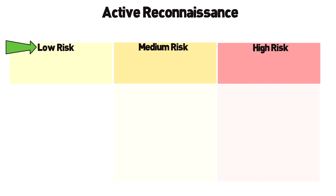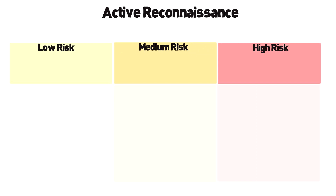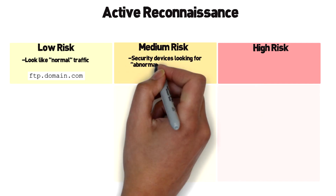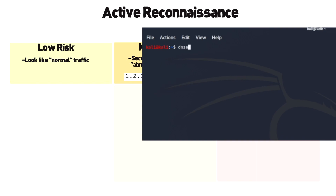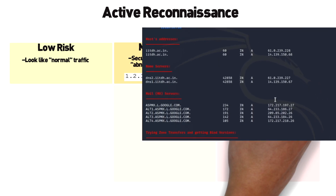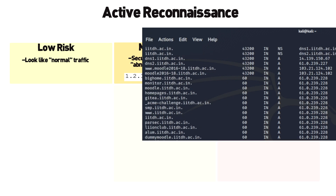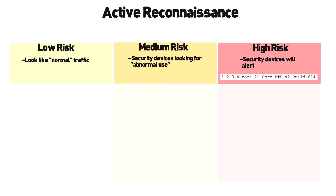We start with low risk items and then use that information in a careful and strategic way with the high risk ones. Low risk reconnaissance generally deals with fairly benign scans or queries that usually won't trip IDS or firewall devices. Medium risk consists of items that security devices are actively looking for, but if done correctly, can be accomplished with low risk. High risk reconnaissance are those that will definitely trip a security device that is configured correctly — however, the idea is to minimize the time spent in this area by using the information we've obtained early on.